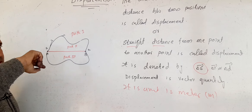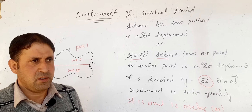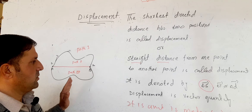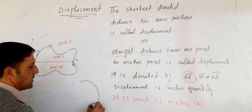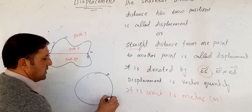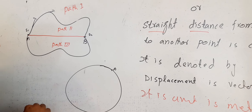In one example, the distance and displacement are different because the path taken is not straight. The distance is greater than the displacement. If a body changes direction and returns to point A, then the displacement is different from the distance.